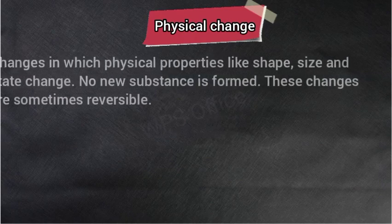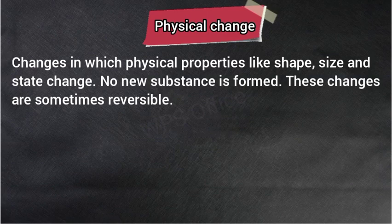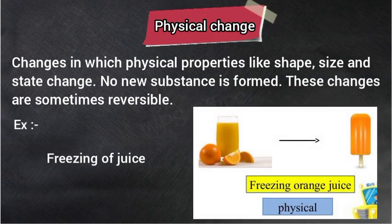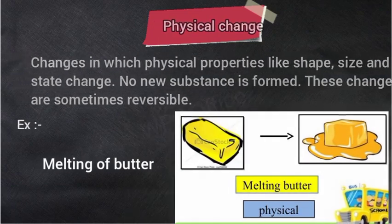And the next — physical change, यानि भौतिक परिवर्तन. Changes in which physical properties like shape, size, and state change. ऐसा परिवर्तन जिसमें उसके भौतिक गुणों में परिवर्तन — यानि आकार में, माप में, या अवस्था में परिवर्तन होता है, इसे physical change कहते हैं. These changes are sometimes reversible — और ये परिवर्तन कभी-कभी reversible होते हैं. For example: freezing of juice — juice का जमना; melting of butter — मक्खन का पिघलना.